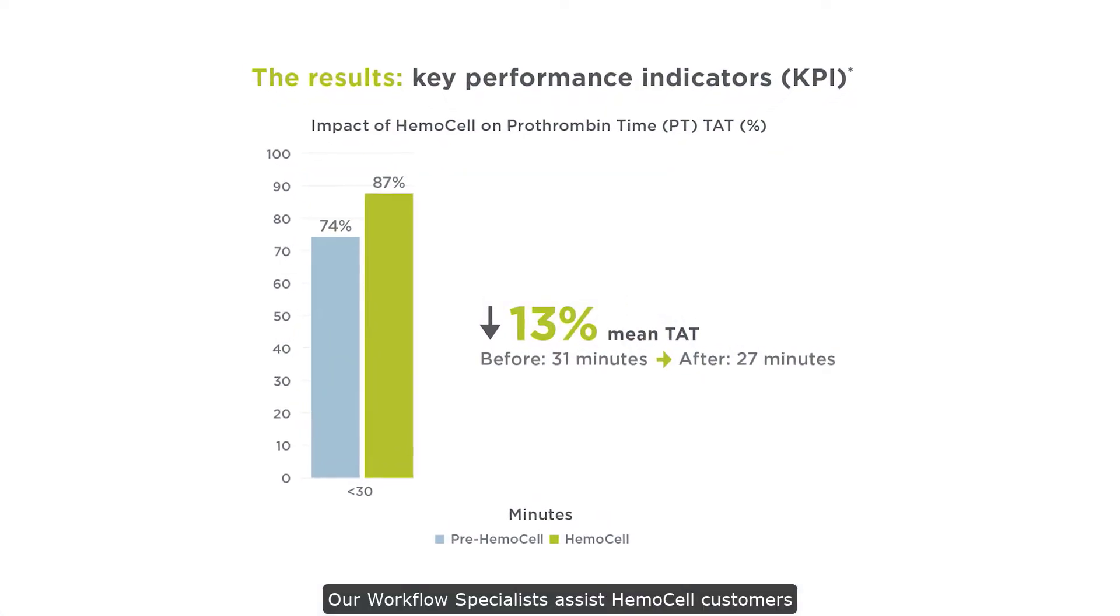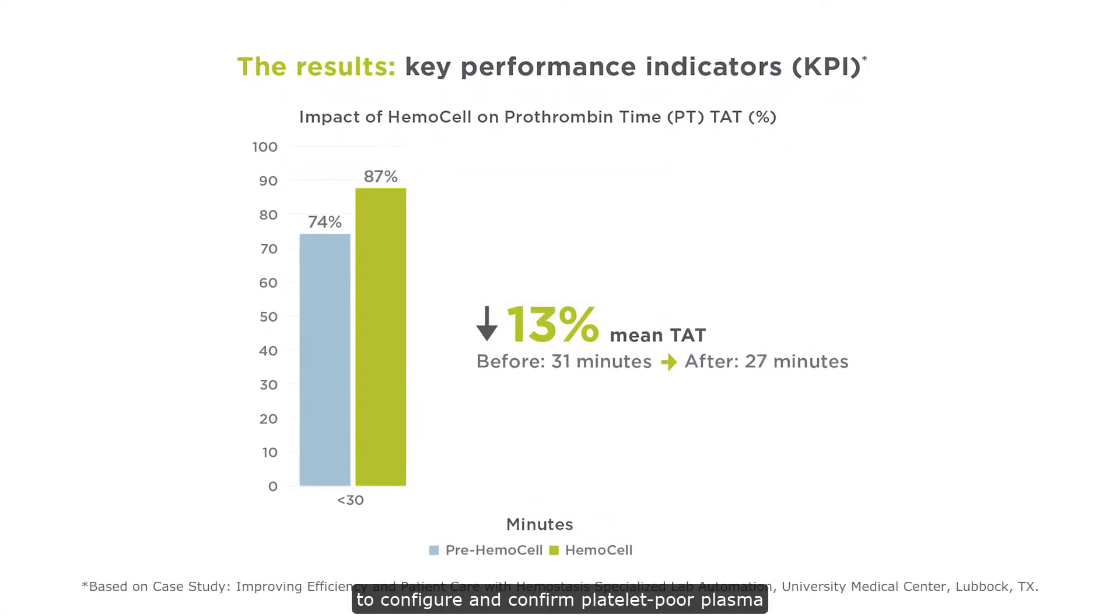Our workflow specialists assist HemoCell customers to configure and confirm platelet-poor plasma, while supporting optimization of their individual system to achieve 30-minute turnaround times.